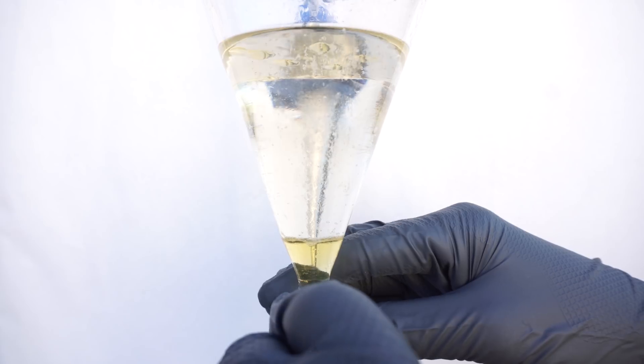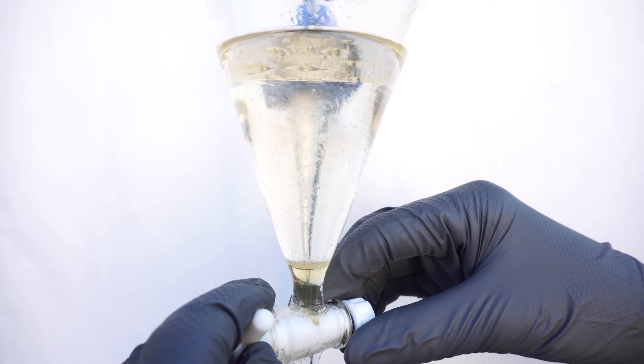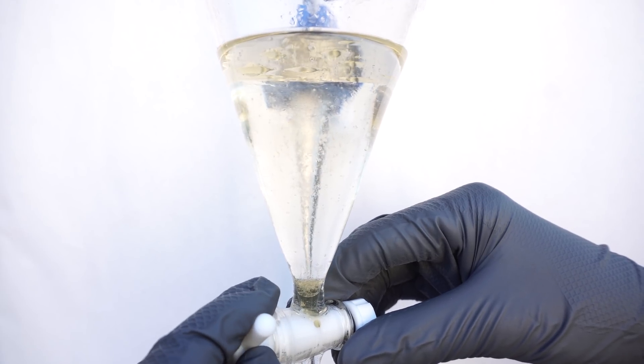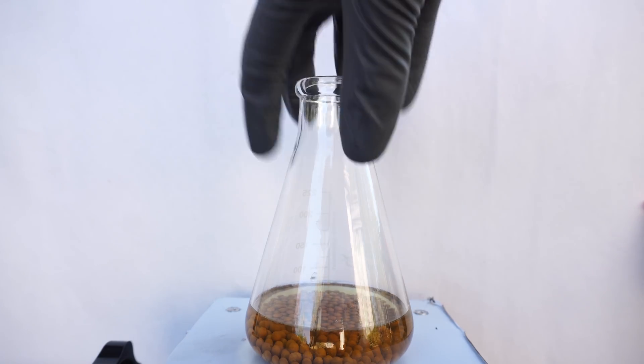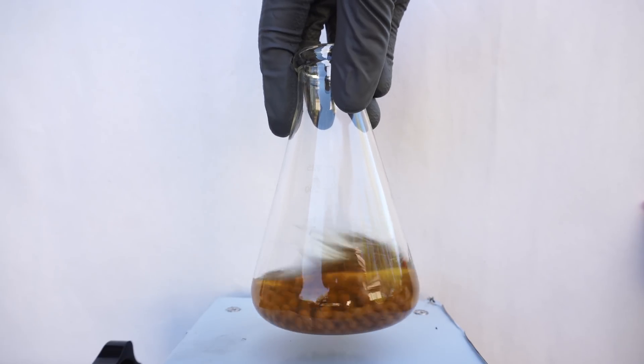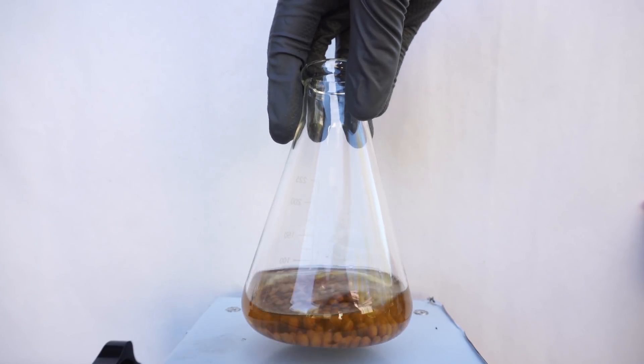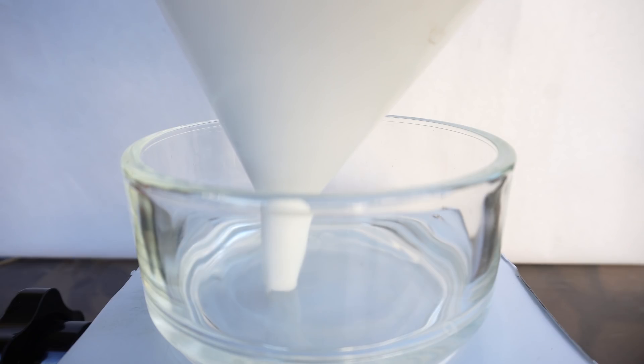I then drain my DCM layer into a clean flask filled with molecular sieves. I use 3A molecular sieves specifically, though you could have used something like calcium chloride too. This will continue to dry the DCM. I leave the sieves in for about 20 minutes with occasional mixing. Then we filter the sieves from the DCM into a recrystallization dish, followed by washing the sieves with a small amount of DCM and adding that as well.